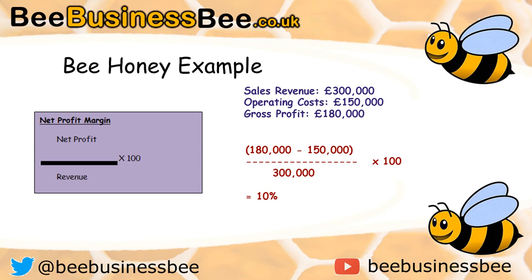For the net profit worked example: you take gross profit of £180,000 and subtract operating costs of £150,000 to get net profit. Dividing net profit by sales revenue of £300,000 and multiplying by 100 gives 10%. So originally 60% gross margin, now 10% net — the 50% gap between them represents the operating costs as a percentage.